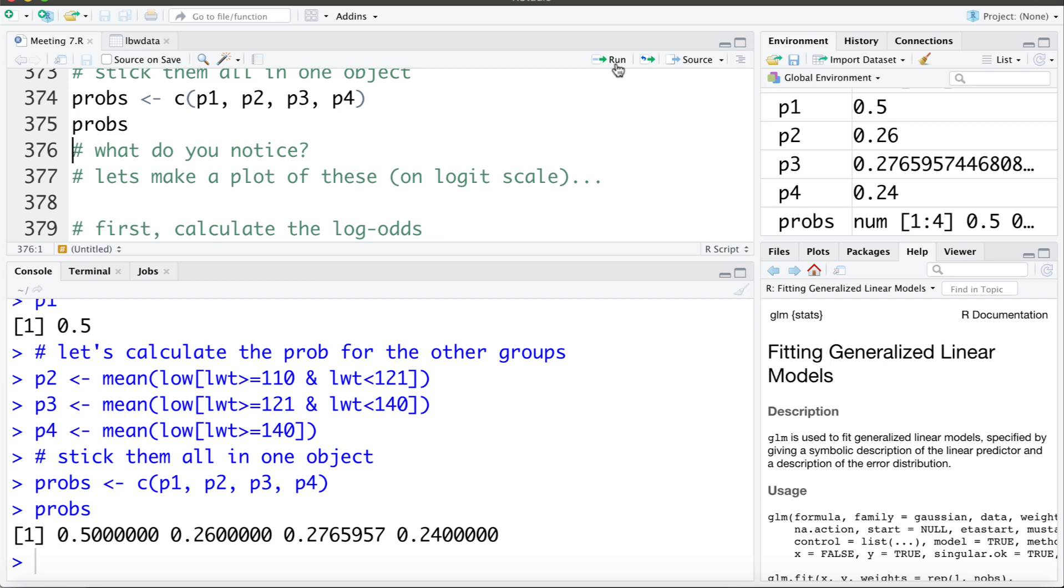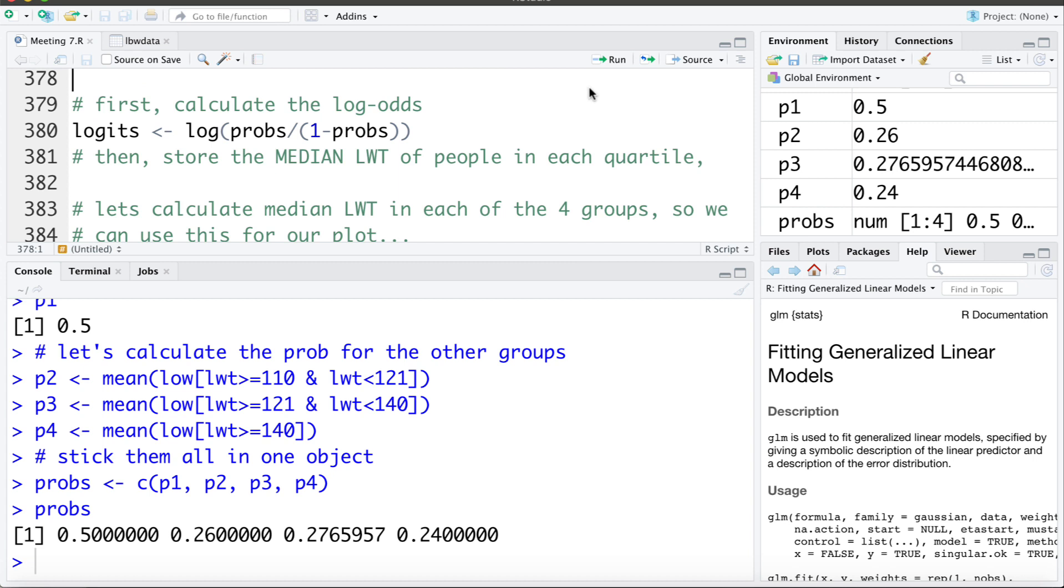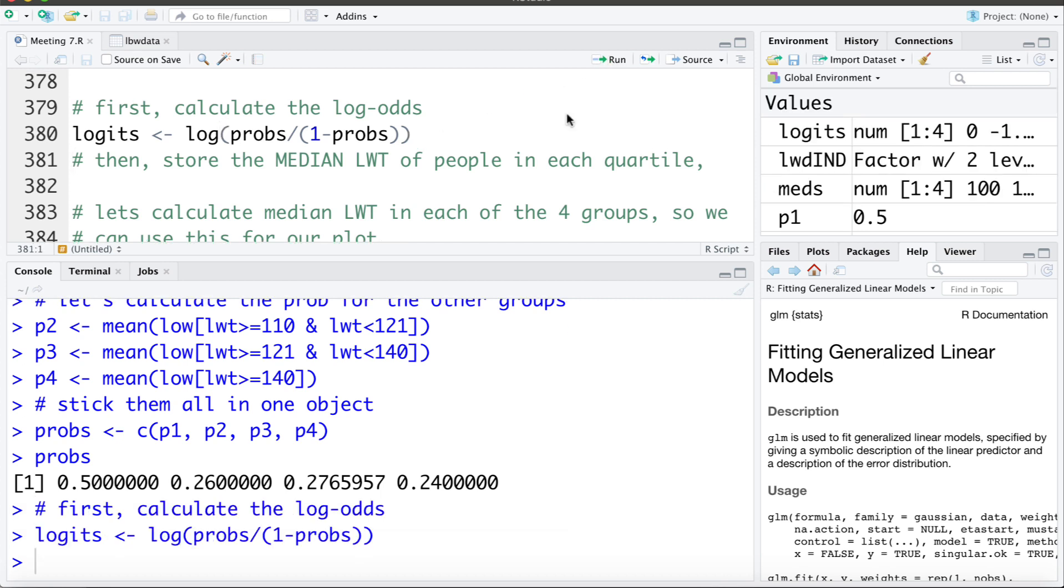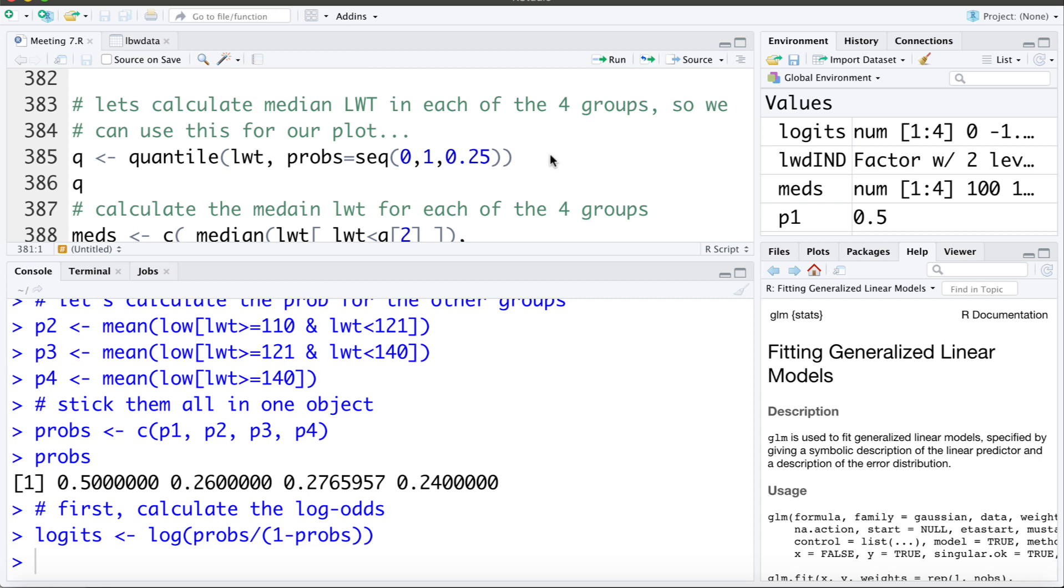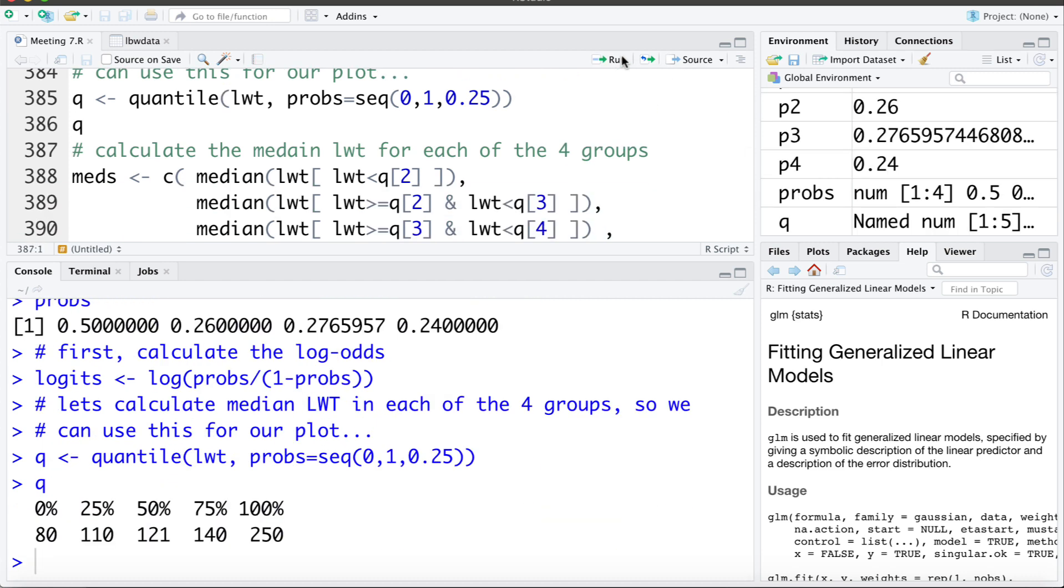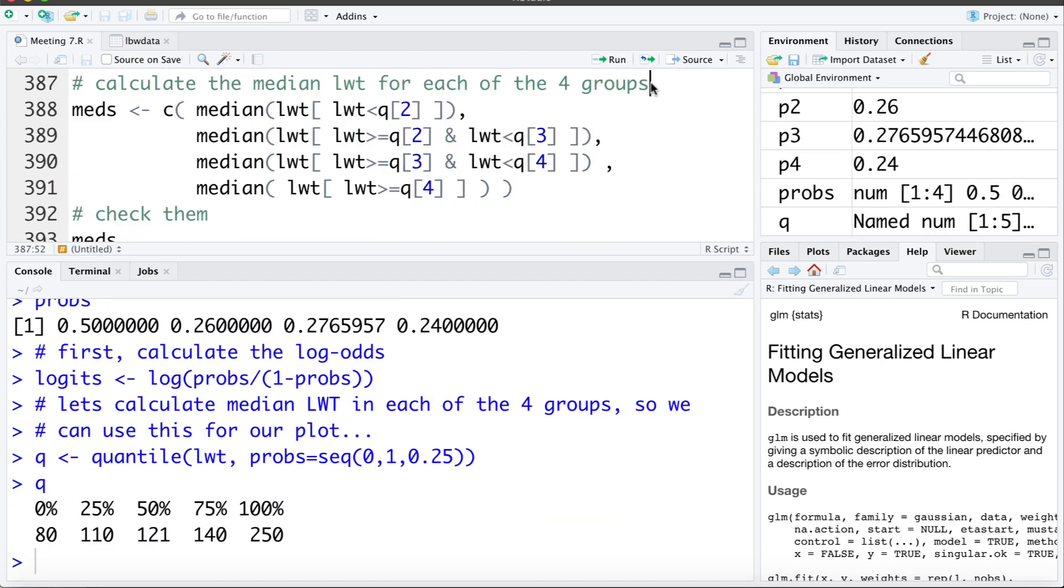So we're going to make a plot of these on the log odds scale. To do that the first thing I'm going to do is calculate the logits or the log odds. So I'm going to take the probabilities divided by 1 minus the probabilities to get the odds, and then I'm going to take the log of that. Then the next thing I'm going to do is for each of those four groups I'm going to use as a midpoint the median weight within each of them. So first I just want to show you here I'm going to calculate those quartiles again that define the four groups and store them in something called Q for quartile. So we can see those are the four quartiles there.